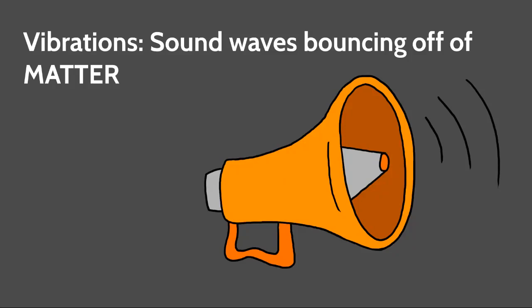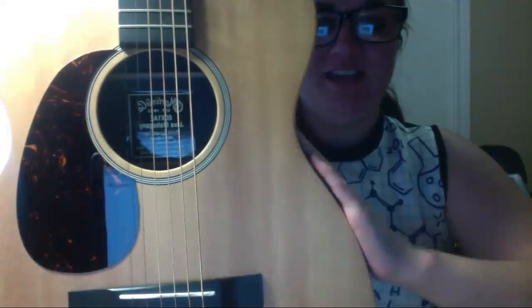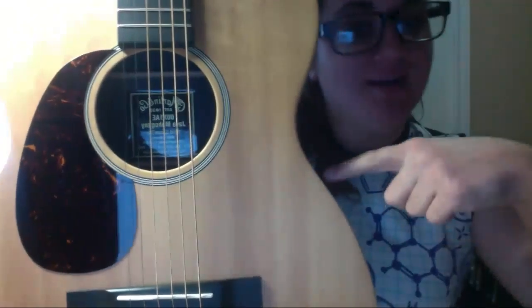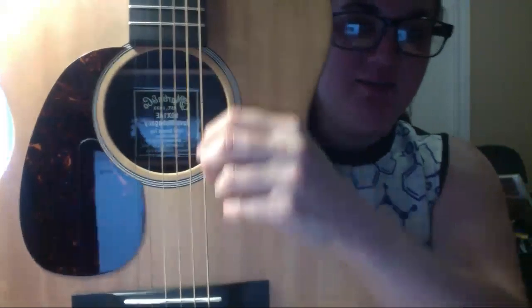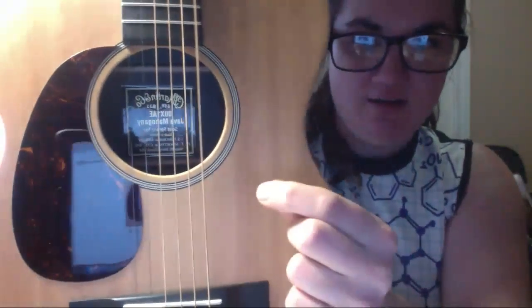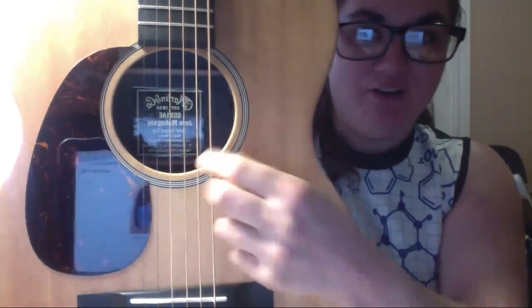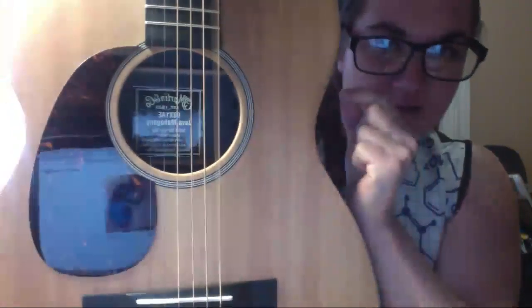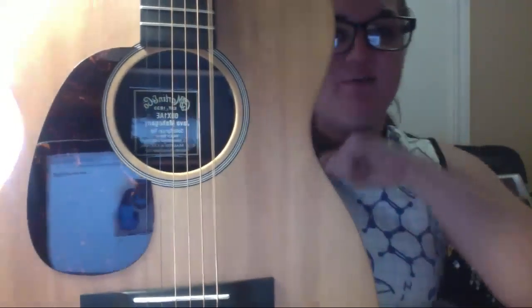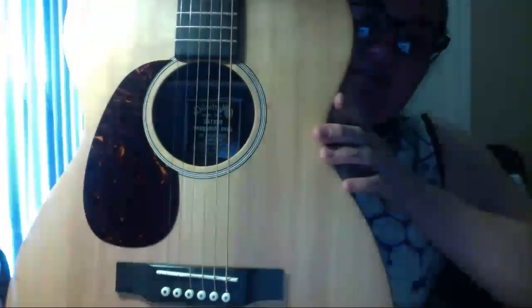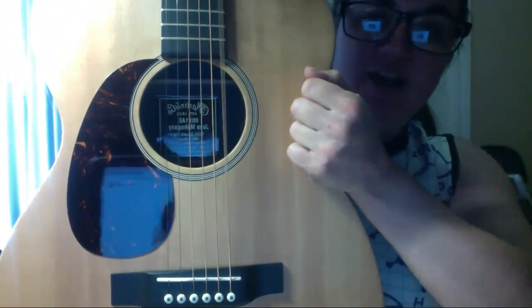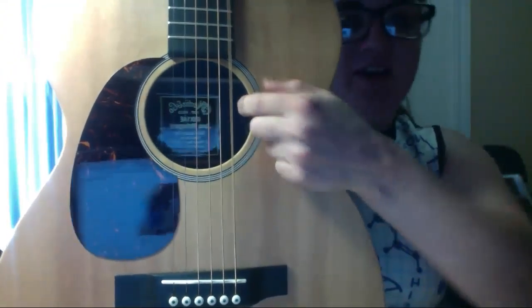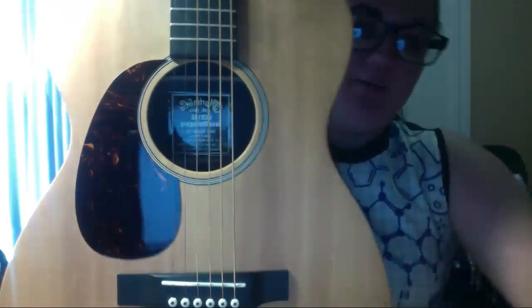I came back with my awesome guitar, and I want to show you — when I pluck one of the strings, you see that moving back and forth, right? It's easiest on the thickest string. You see it moving back and forth really fast? That's vibrations. Inside of here, this whole side of my guitar is all hollow, and that's so that when I pluck the string, it vibrates and then echoes throughout this chamber inside that's completely hollow, making it sound a little bit louder. I'm going to come back to my guitar in a second.